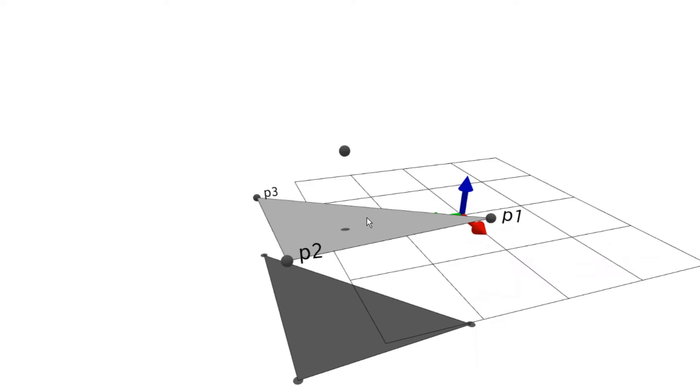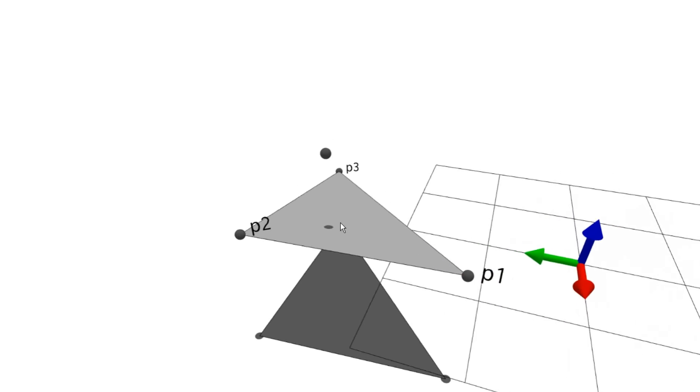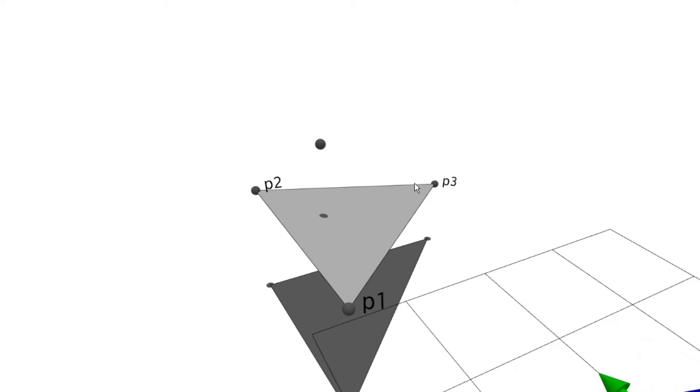To do that, we need the normal of the plane, because the shortest distance from this point to this plane is along the normal of the plane.